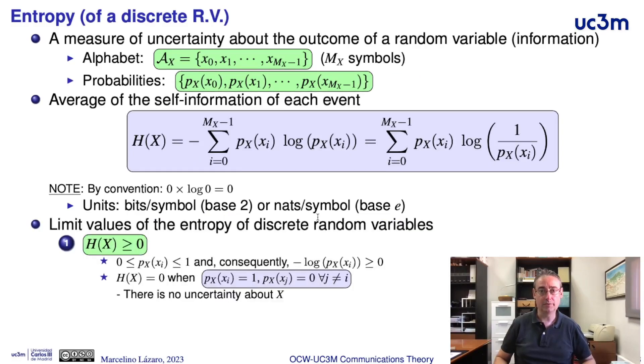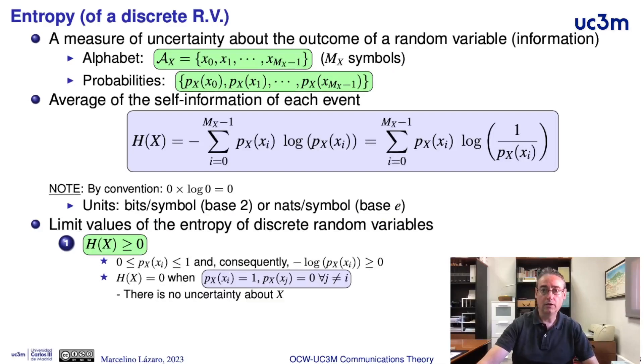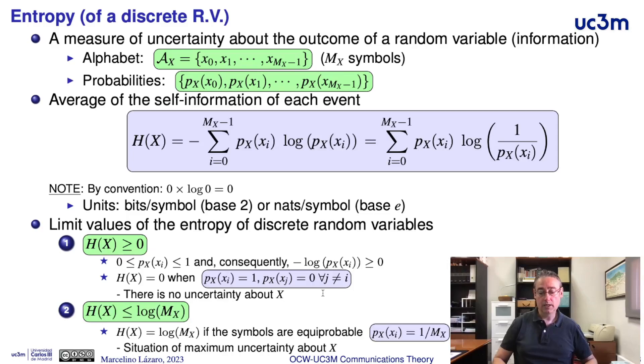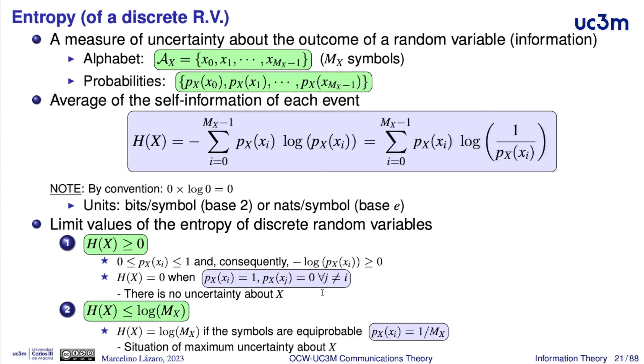This measure has two limits. The lowest possible value for the entropy of a discrete random variable is 0, and we have zero when we have no uncertainty about the result of the random variable. And the maximum value happens in the situation where we have the maximum possible uncertainty. And this happens when, a priori, all the possible events have exactly the same probability.